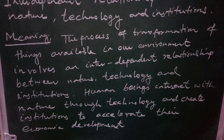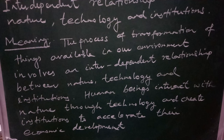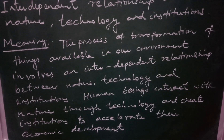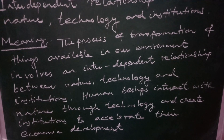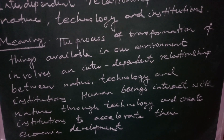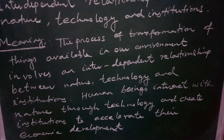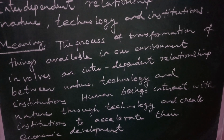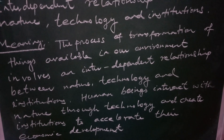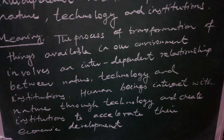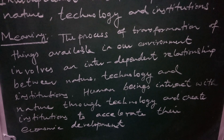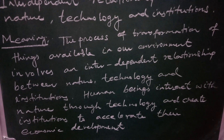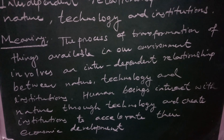The process of transformation of things available in our environment involves an interdependent relationship between nature, technology and institutions. Human beings interact with nature and with the help of technology, they create institutions to increase economic development. The economic development of the country is dependent upon using and developing the resources in a proper way.